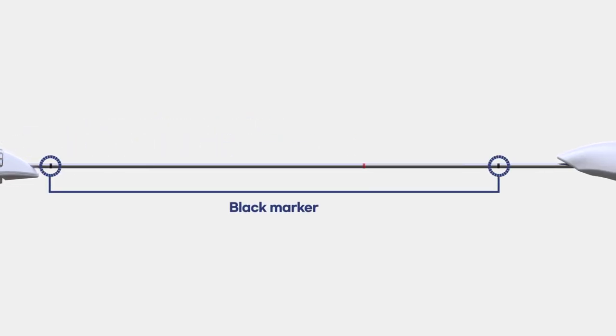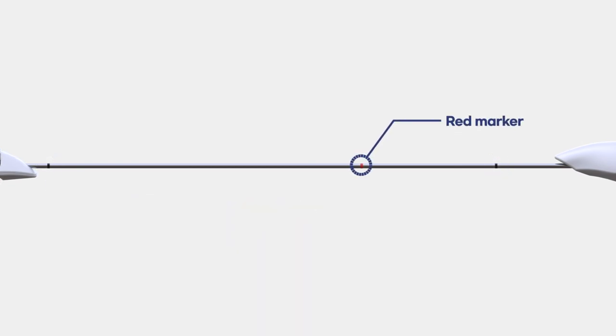Proximal black marker indicates the full deployment of the stent. Red marker indicates the recapturing limit or point of no return.